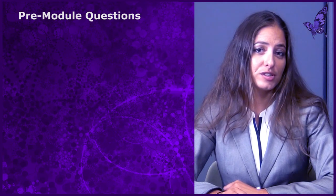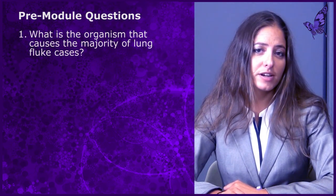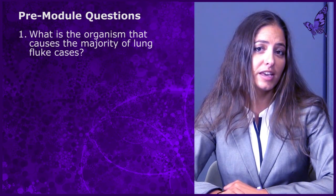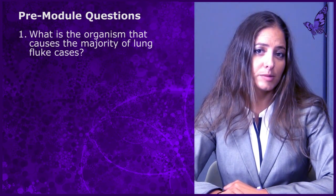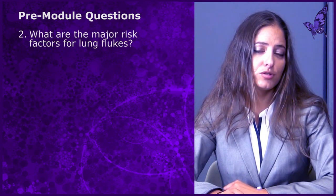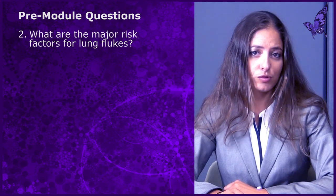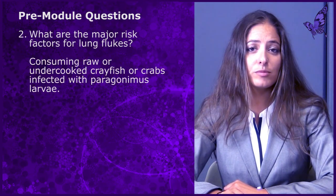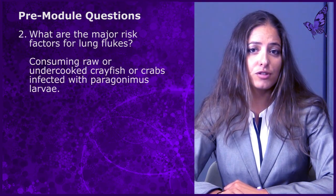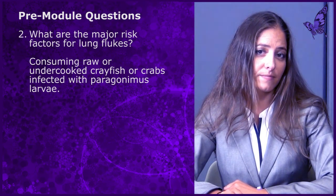Let us turn back to the questions we started the module with. Question number one: what is the organism that causes the majority of lung fluke cases? The answer is Paragonimus westermani. Question number two: what are the major risk factors for lung flukes? The answer is consuming raw or undercooked crawfish or crabs infected with Paragonimus larvae.